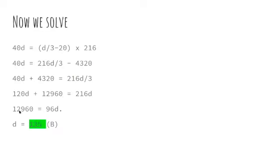And then 12,960 is equal to 96d. And then d divided by 96 is equal to 135.